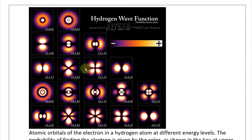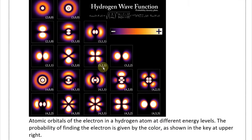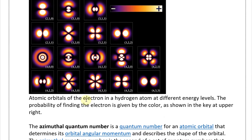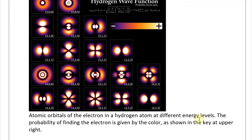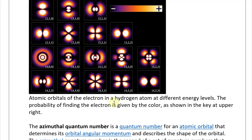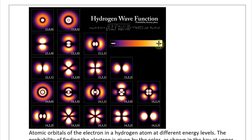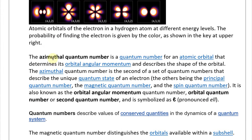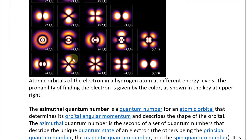Here is the hydrogen wave function, showing atomic orbitals of the electron in the hydrogen atom at different energy levels or principal quantum numbers. The probability of finding the electron is given by the color shown in the key — higher probability is at the brighter side. You can see these different orbital shapes across increasing shell levels. This is included in this biology video just to illustrate that we are dealing with atoms and molecules at a more complex level than a simple planetary orbit model.